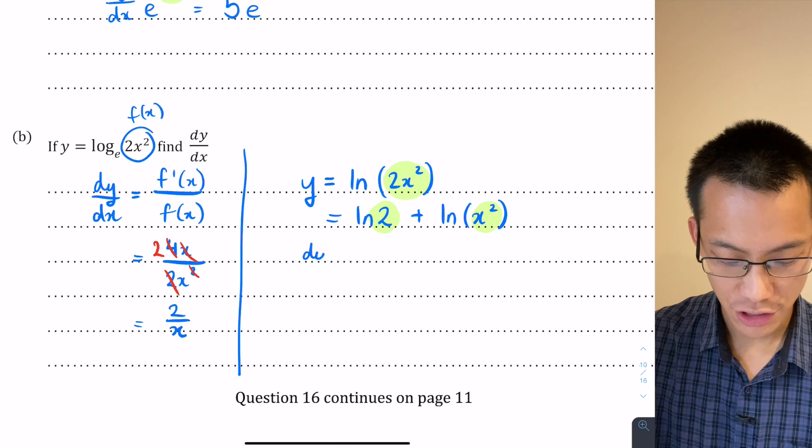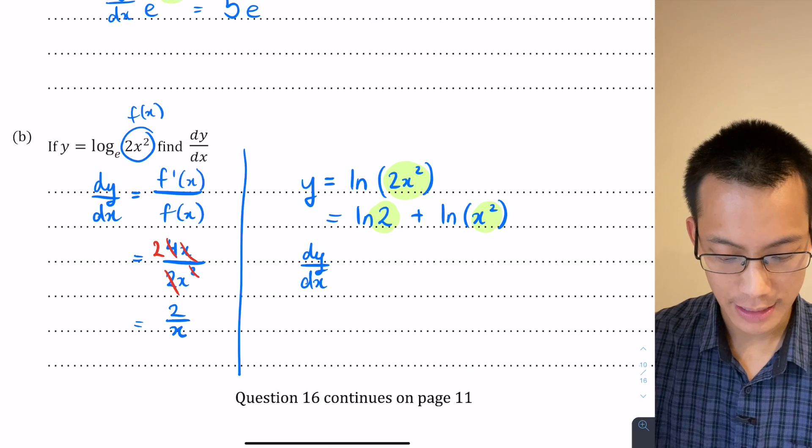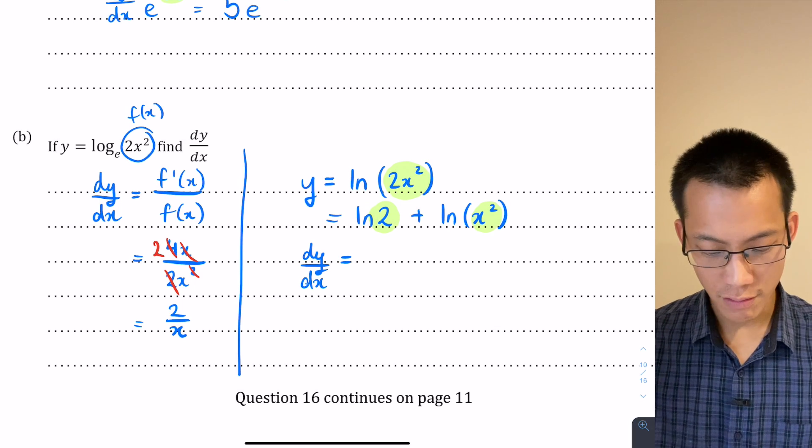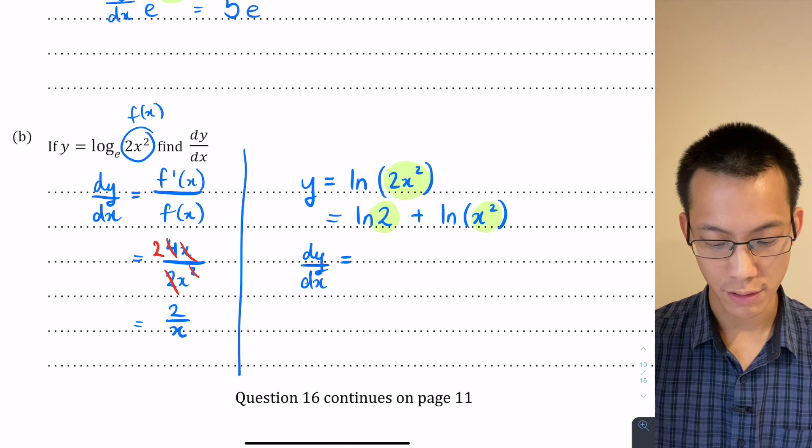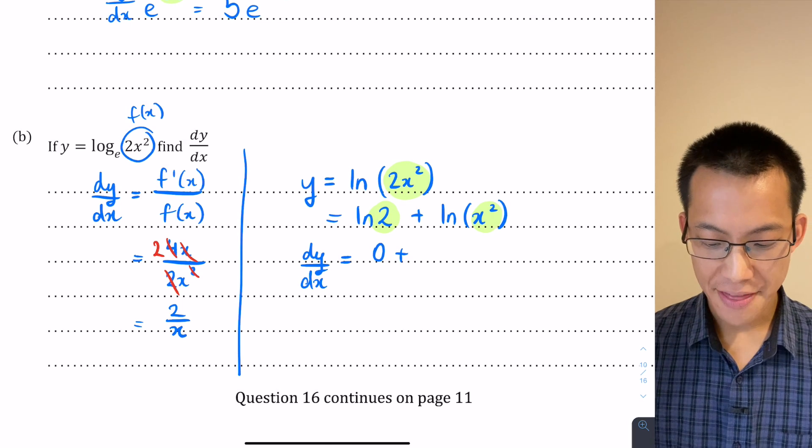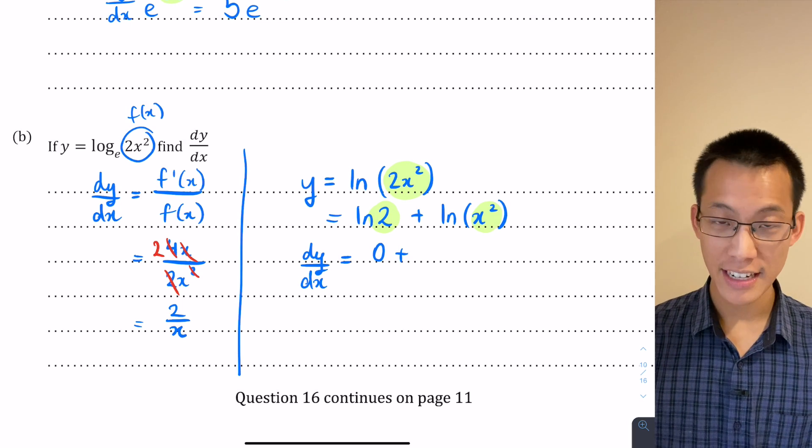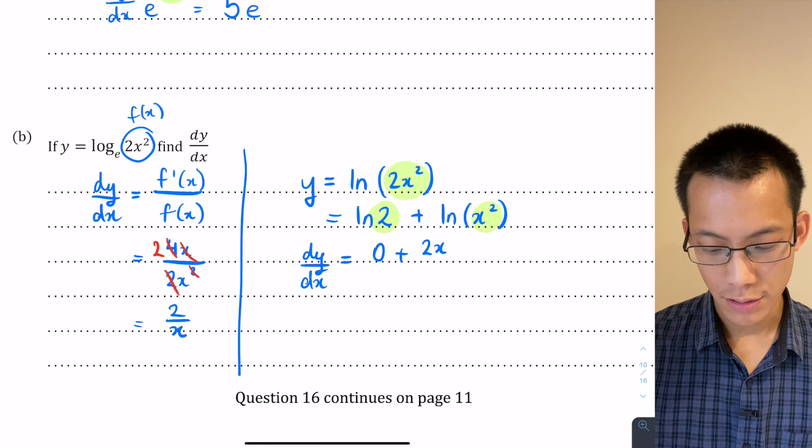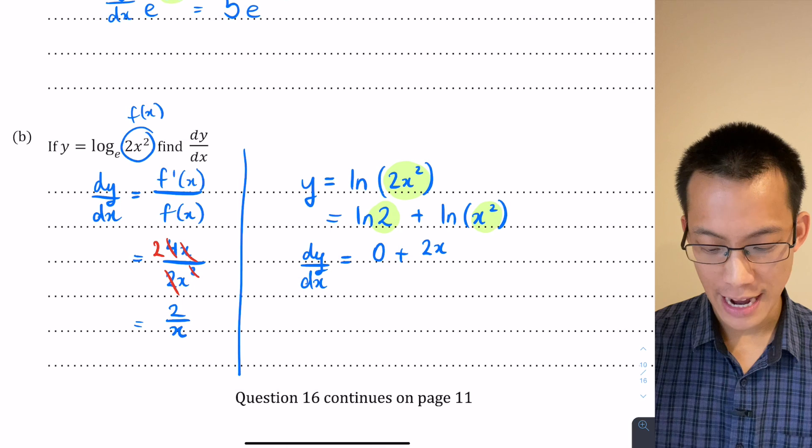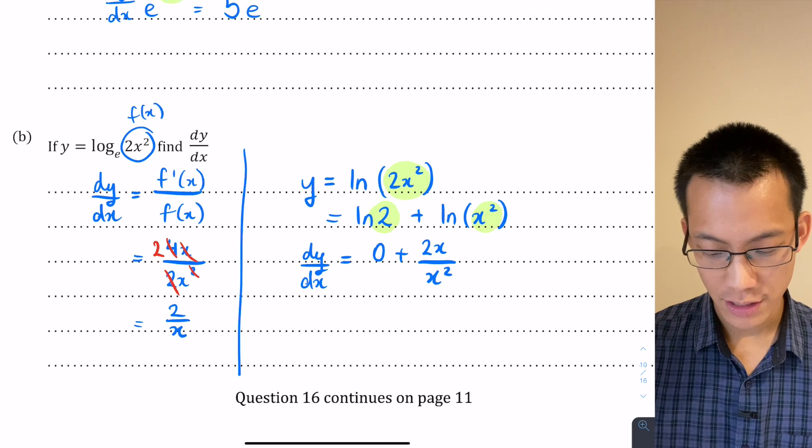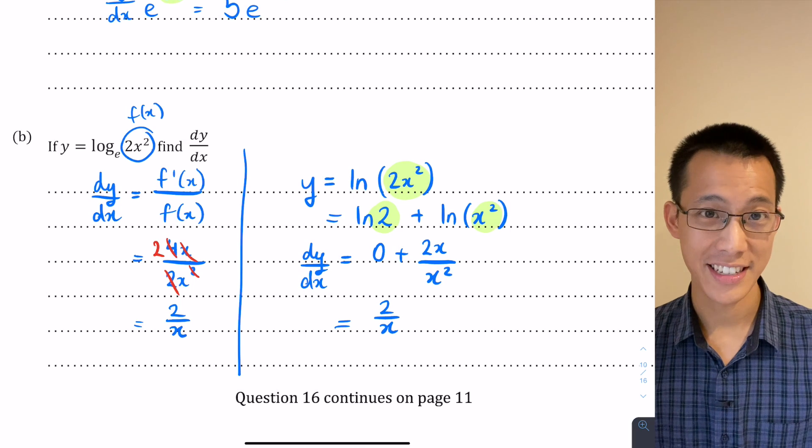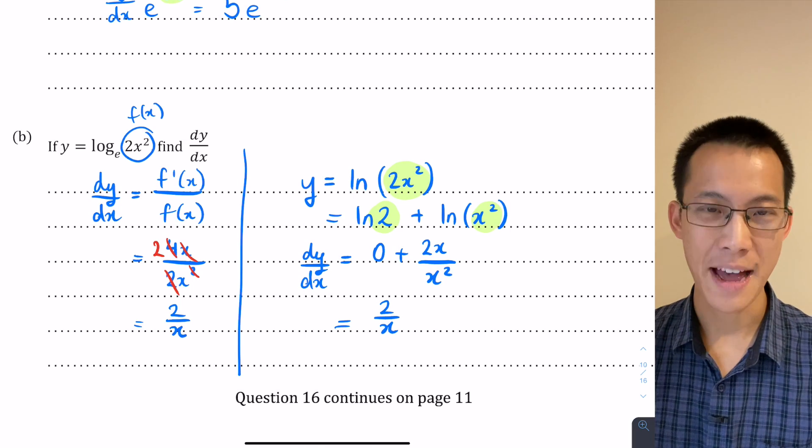So now I've got a simpler statement for y. I'm now going to differentiate that dy on dx. Log 2, this is just a number, so it's a constant. When I differentiate it, I just get 0. And then I'm going to repeat this same process that I did with the f dash on f before. In this case, f of x is x squared. So its derivative f dash will be 2x divided by x squared. And so I get 2 over x just like I did before.